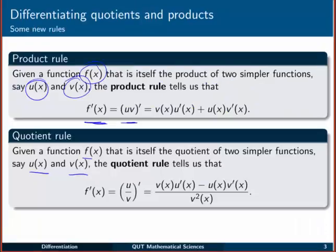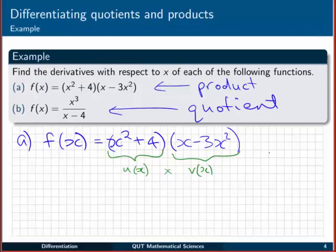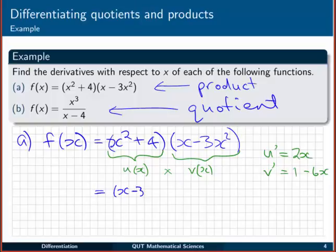Now we need to go back to the rule, and it says we need vu' + uv'. And what you might like to do is just jump over to the side, and say that u' is going to be 2x plus 0, and v' is x, that'll give me a 1, and minus 6x, using the rules from differentiating polynomials. Then we can use the product rule, so it said that we need vu', so that's (x - 3x²) times u' is 2x, and then we need to add to that, and that's going to be u, so that's (x² + 4), multiplied by v' (1 - 6x).